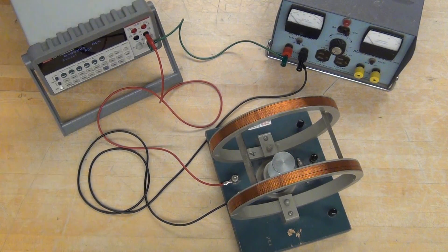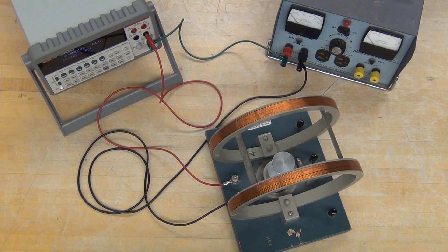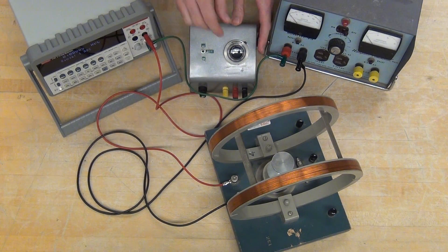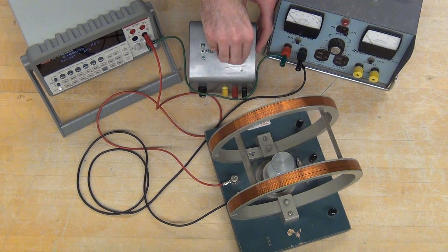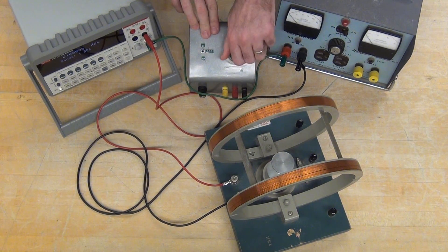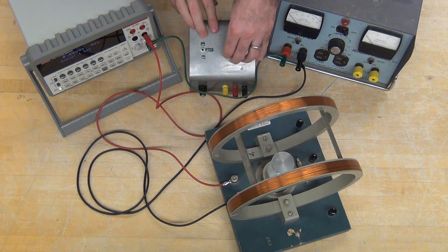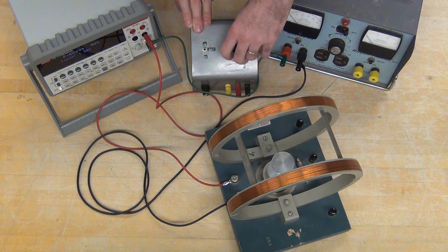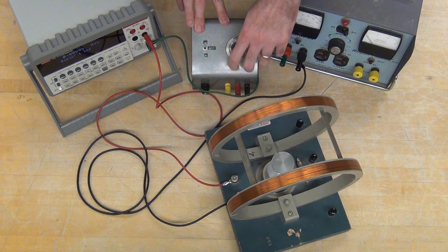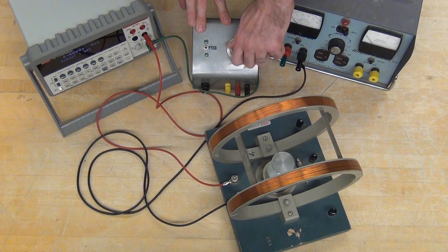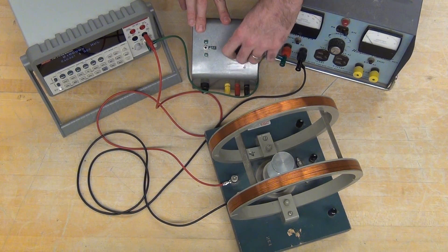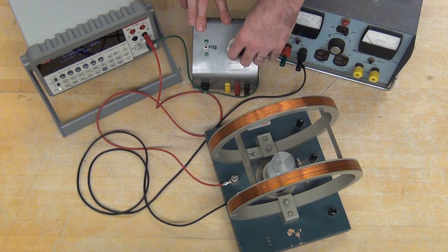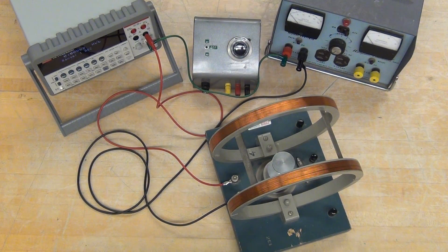This is a gray box that has a multi-turn pot, and it also gives us the ability to reverse which direction the current is. Start with your gray box turned all the way to zero. It's a 10-turn pot, so you'll have plenty of fine-tuning that you can do.